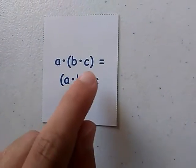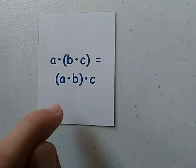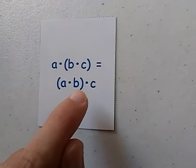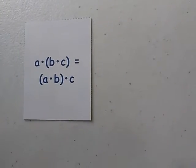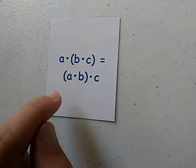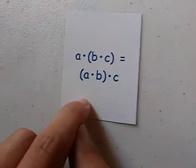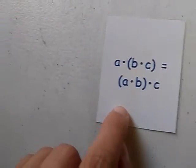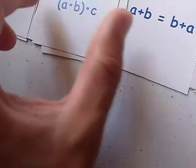B times C times A equals A times B times C. So this is the Associative Property of Multiplication. Do we have that card? Yes, we do — right here.